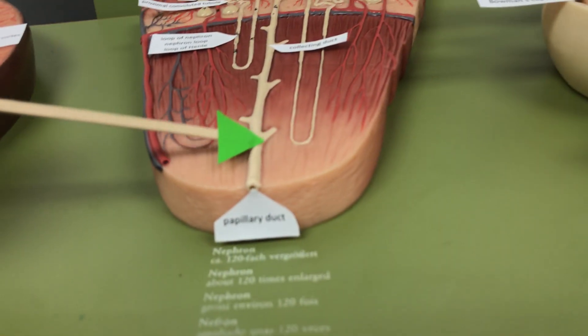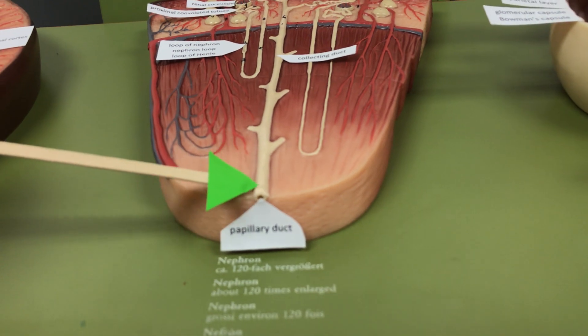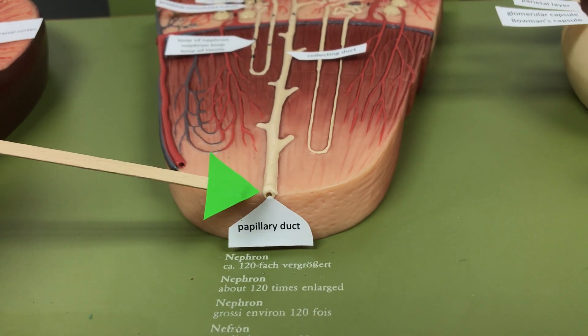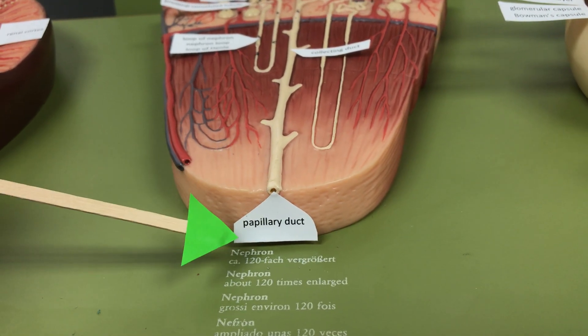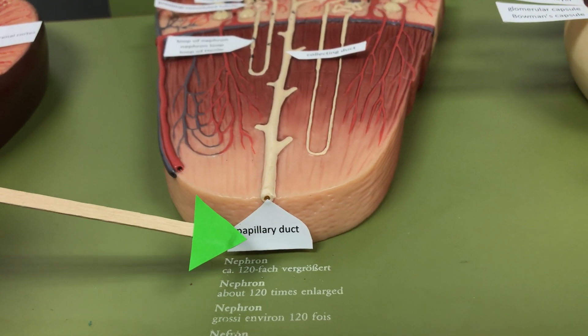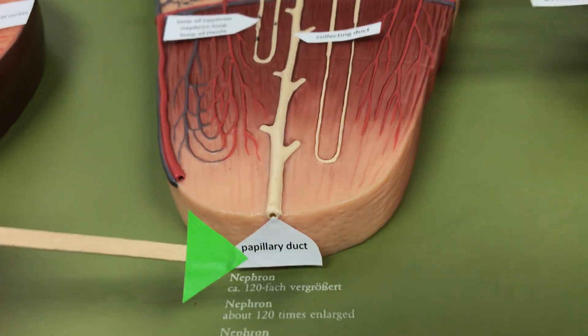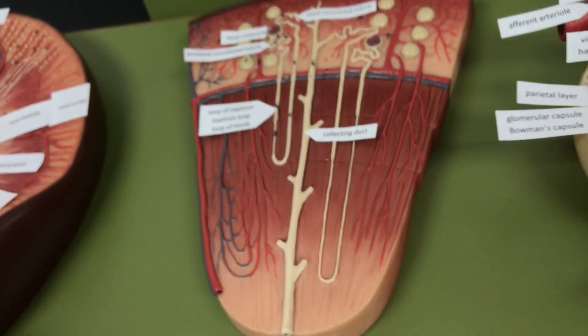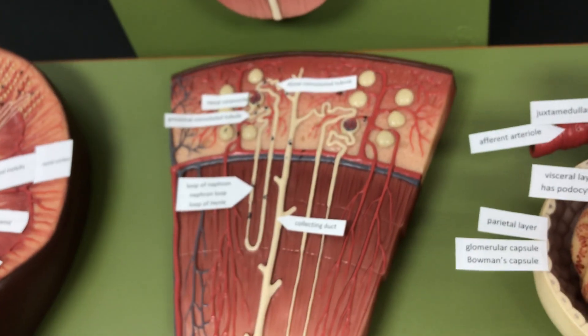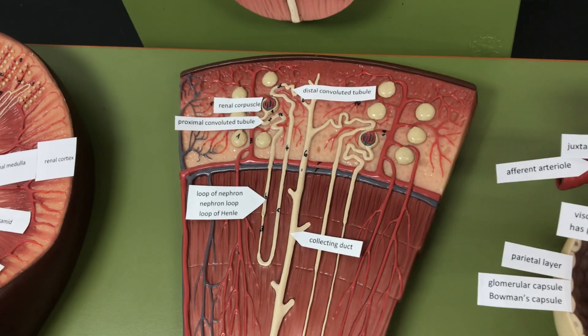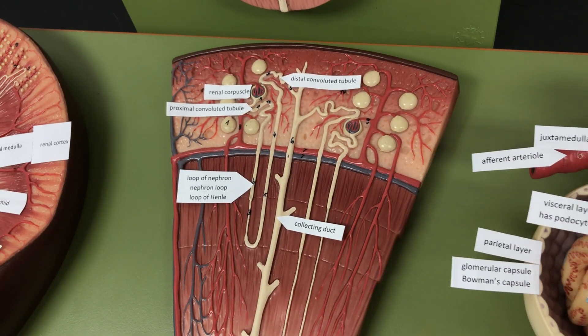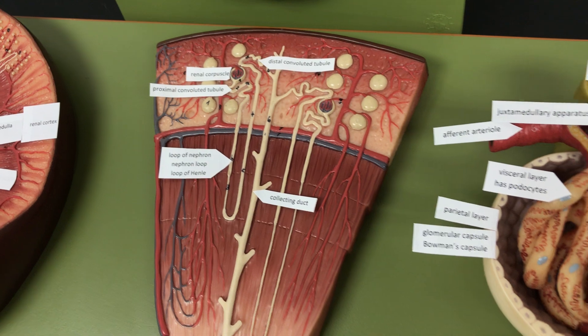The urine is going to leave the collecting duct through the papillary duct, which is going to drain into the calyces, the renal pelvis, and the ureters.